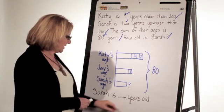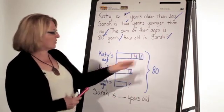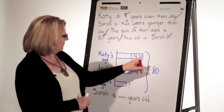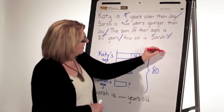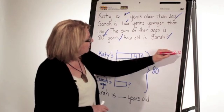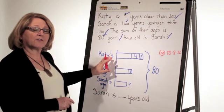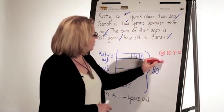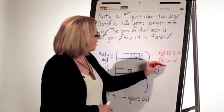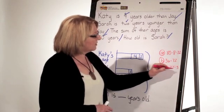Now it's time to move to computation. Life would be easier if I got rid of these extra pieces, so I'm going to subtract them from 80. So let's see, I've got 4, 6, 8. So step A, 80 minus 8 is 72. Now I've got 3 equal units that equal 72 years. So if 3 units equal 72, 1 unit would equal 72 divided by 3.